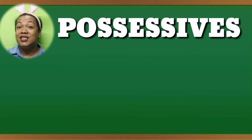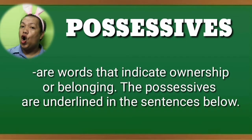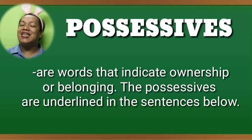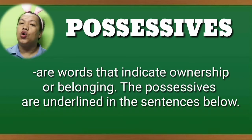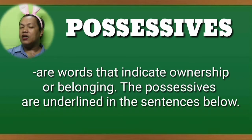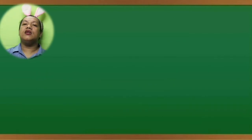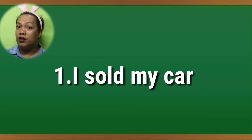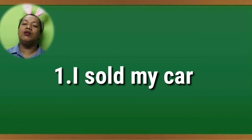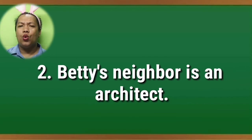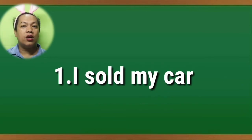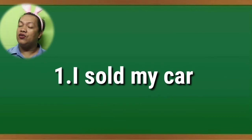Possessives are words that indicate ownership or belonging. The possessives will be shown through example sentences flashed on your screens. Example number one: I sold my car. Example number two: Betty's neighbor is an architect.